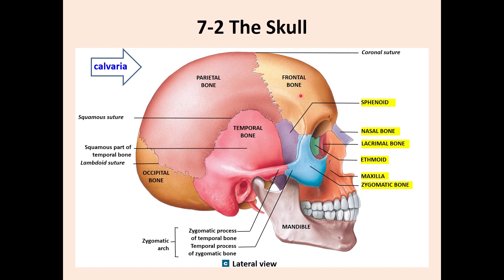The coronal suture connects the frontal bone and the parietal bone. The occipital bone at the back is separated from the parietal bone by the lambdoid suture. The temporal bone is separated from the parietal bone by the squamous suture.